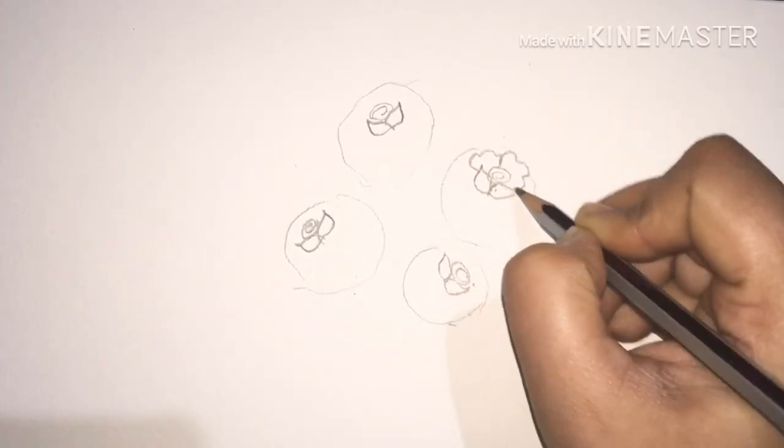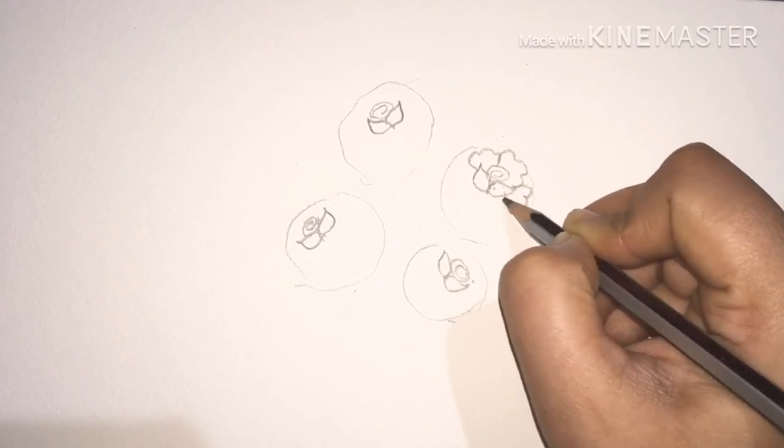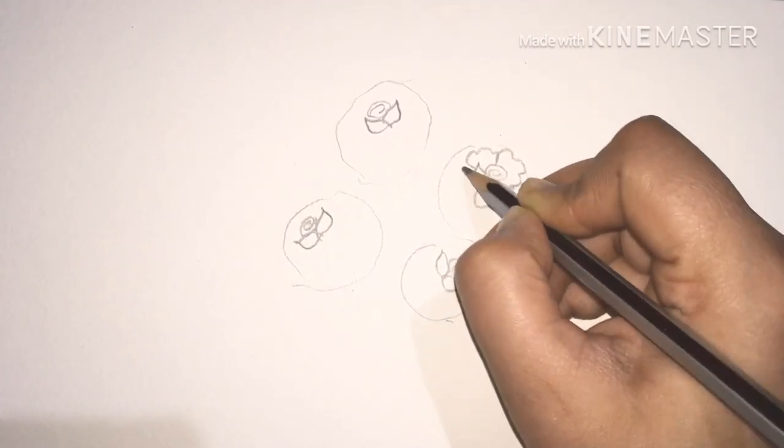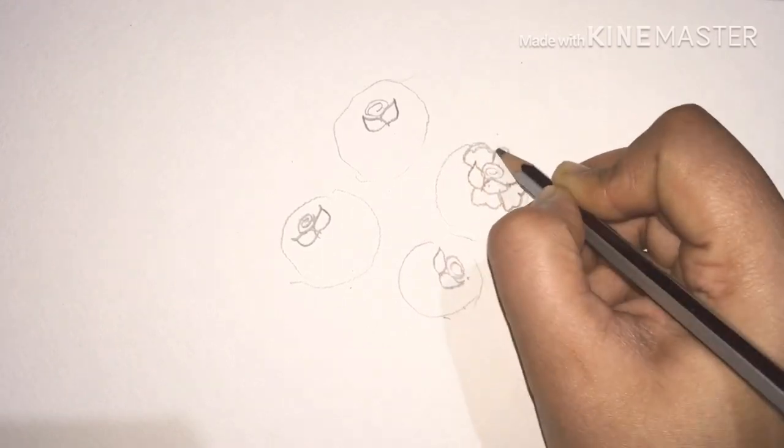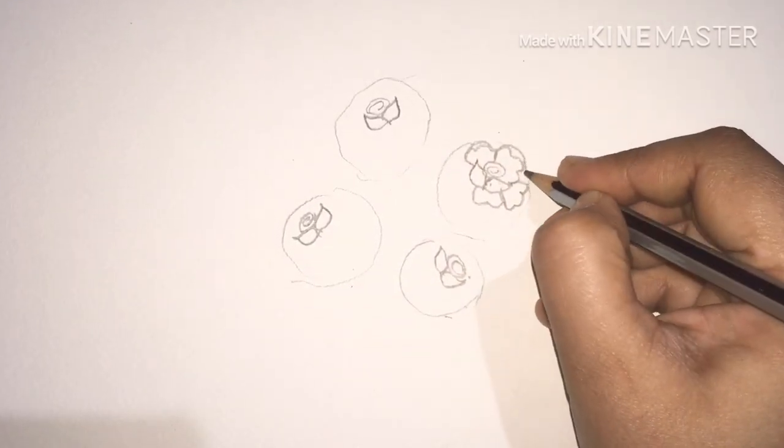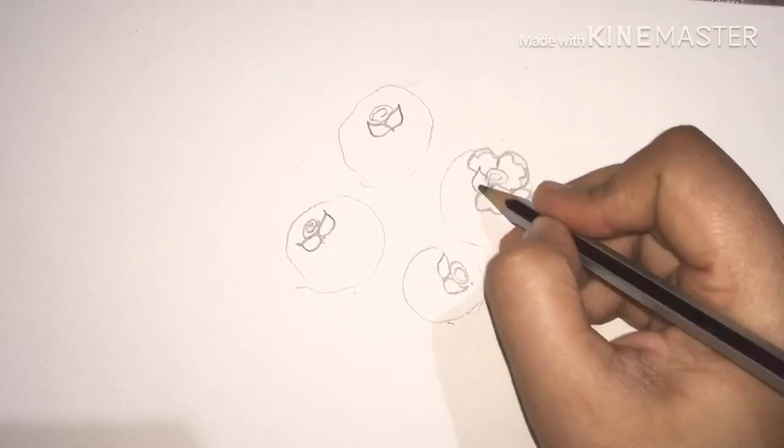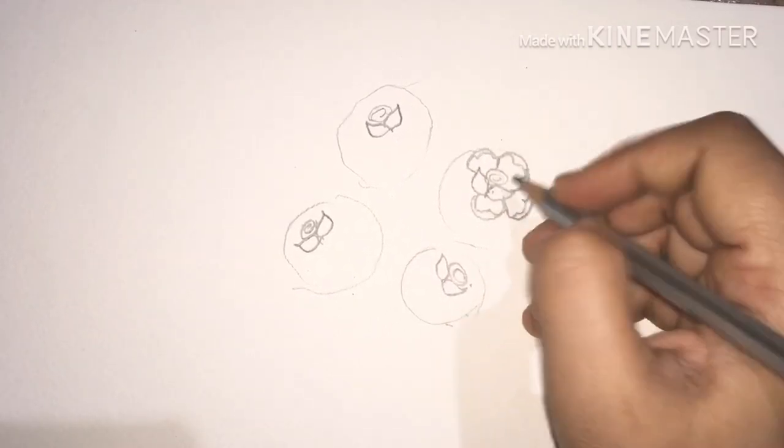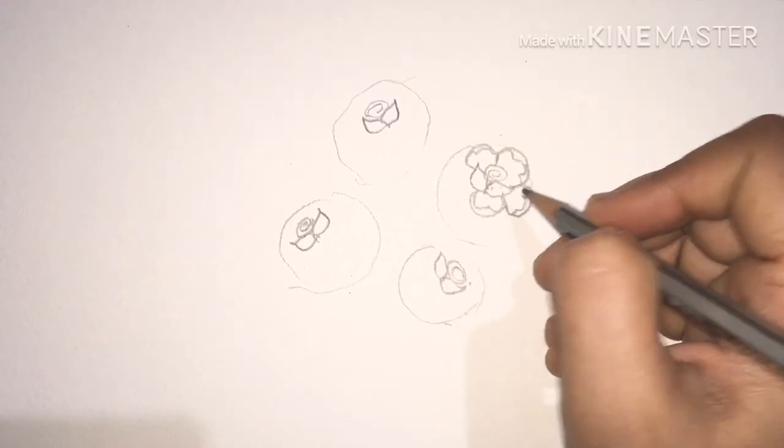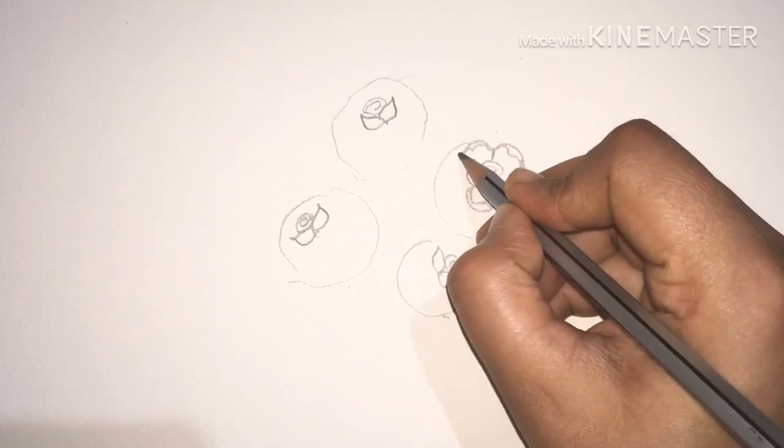This is basically a tutorial for small kids who would like to draw roses but are afraid to do so because of the complexity. We'll draw a circle and make it circular to make it look like turned petals.